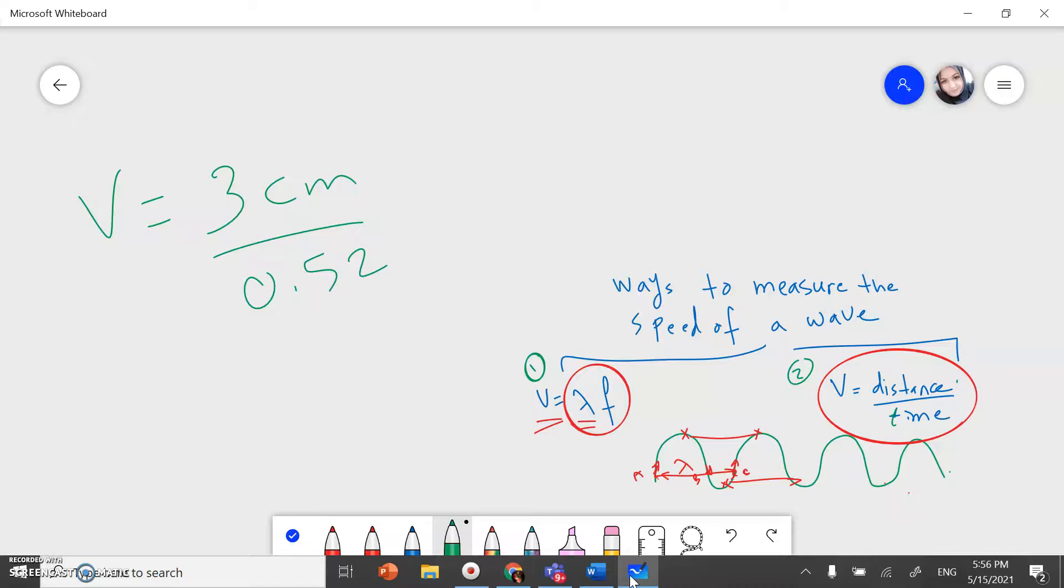So, 3 divided by 0.52. Which is around 5.7. Which is almost 6 centimeter per second. I can convert it to meter divided by 100. So, it will give you 0.06 meter per second. Same speed. Same value.